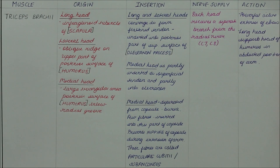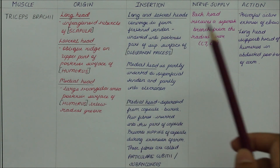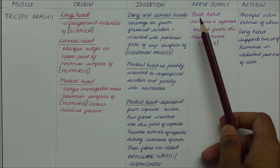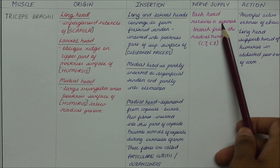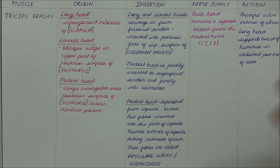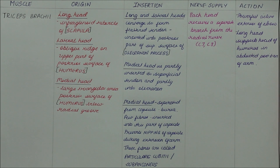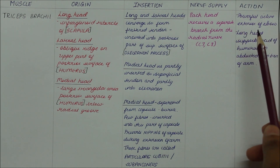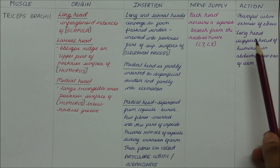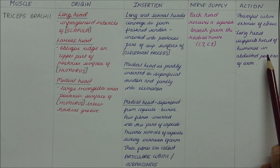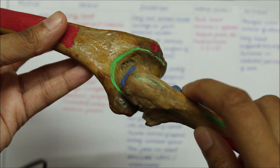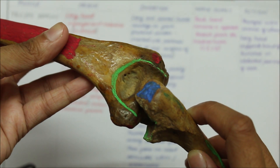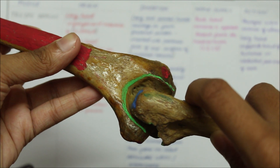Moving on to the nerve supply, the triceps is supplied by the radial nerve. Each head — the long head, the lateral head and the medial head — receives a separate branch from the radial nerve. Moving on to the action, it is a powerful and active extensor of the elbow. The long head also supports the head of the humerus in the abducted position of the arm.